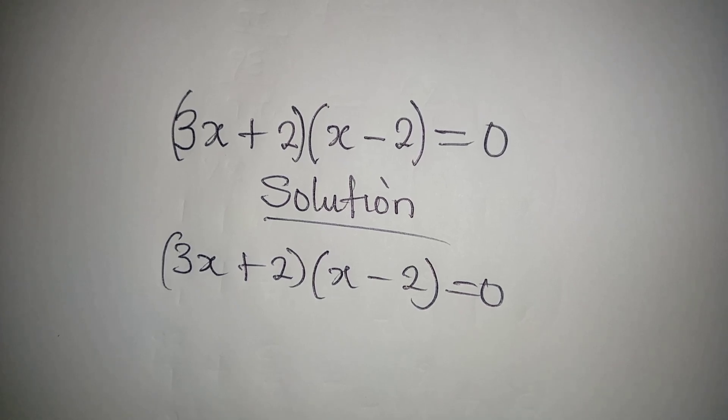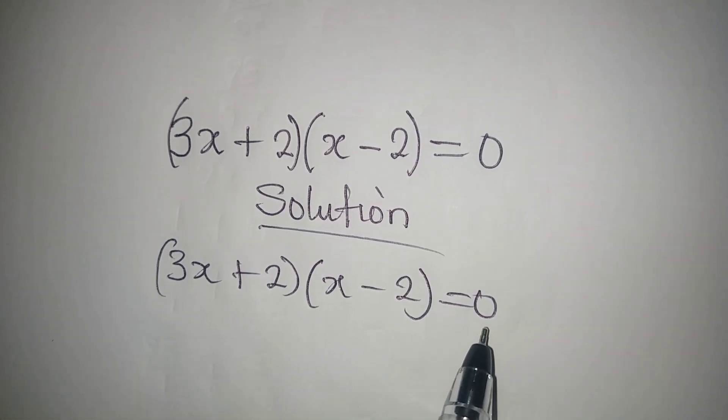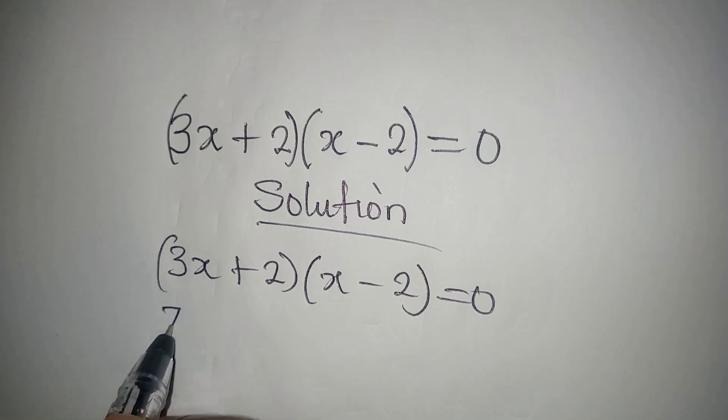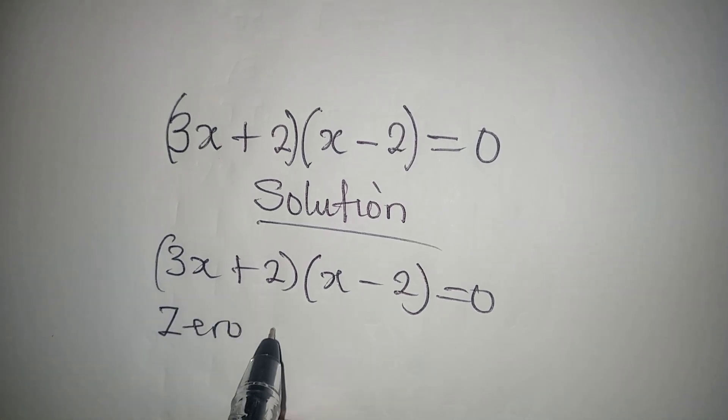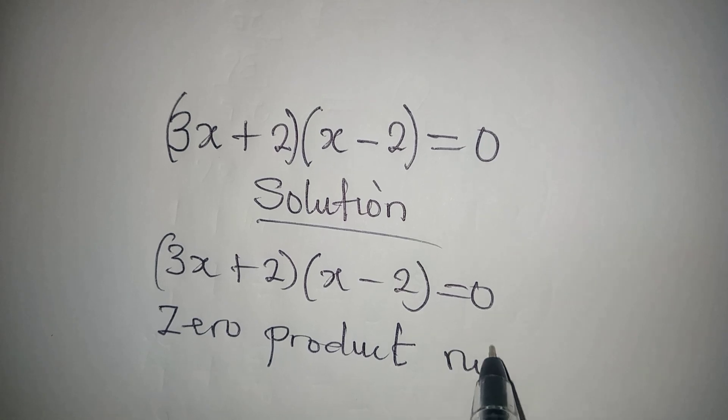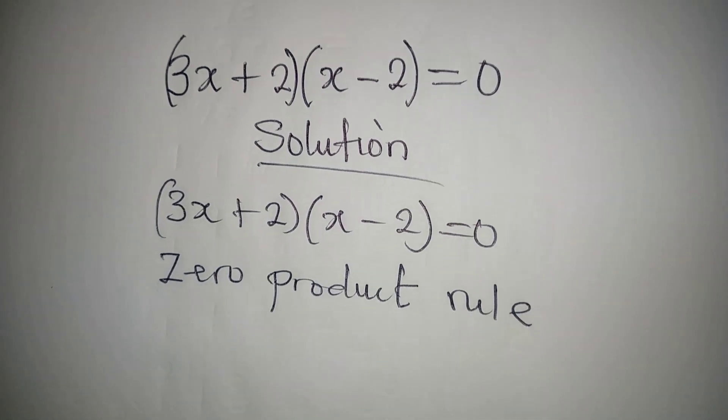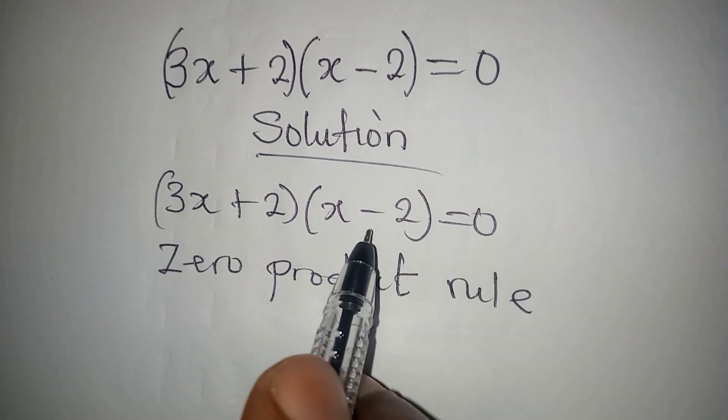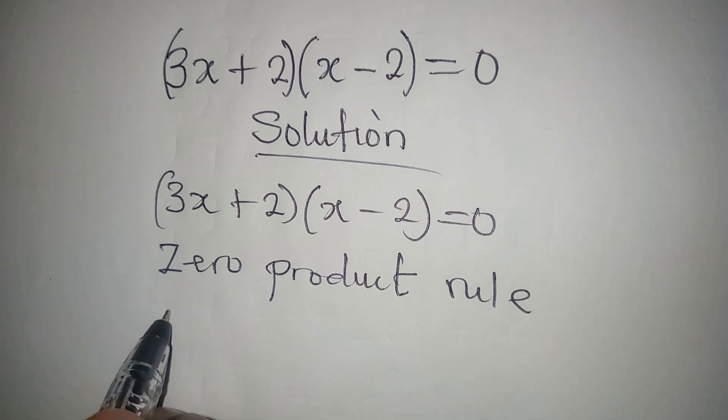Since you're multiplying both of them to get zero, what you will do is apply your zero product rule, saying that either this is equal to zero or this is equal to zero.